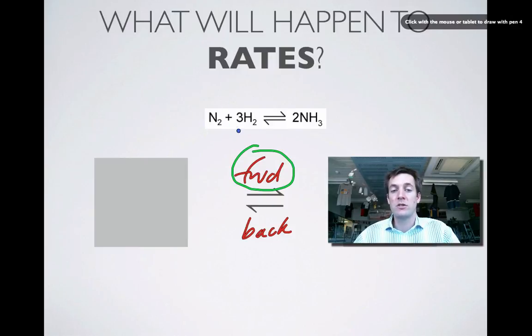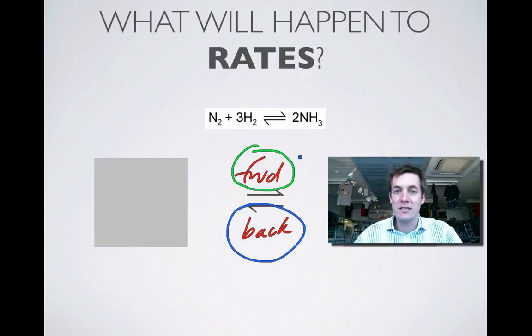Well, it's got to go to the side with the fewest moles of gas. And in this case, but not in all cases, that means that the backward reaction has to be favoured. So the backward reaction will slow down less than the forward reaction, but they'll both slow down.